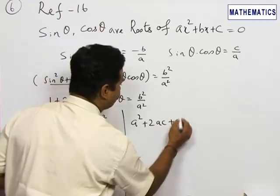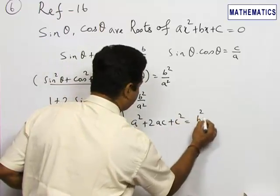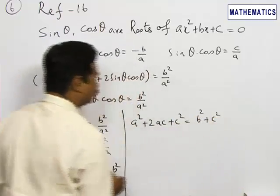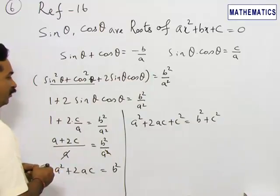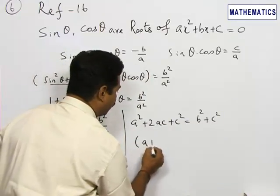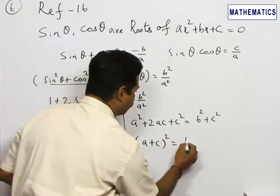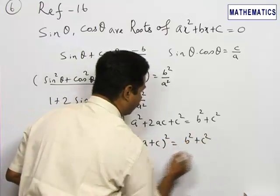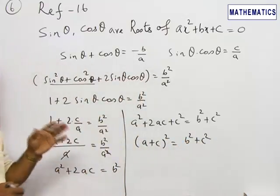...plus c², I can write this as b² + c². Therefore, on simplifying, this will become (a + c)² = b² + c². So of the given four choices...